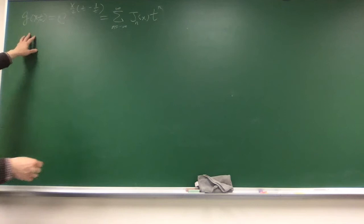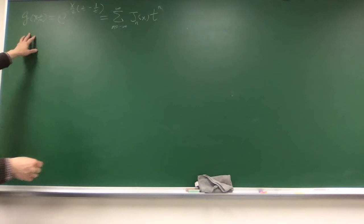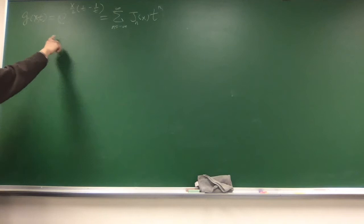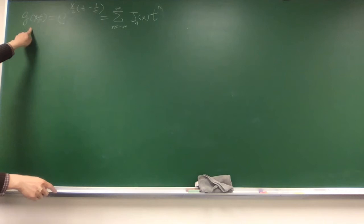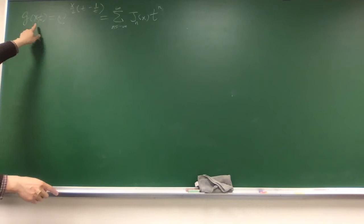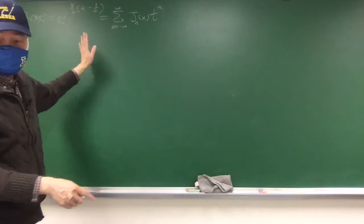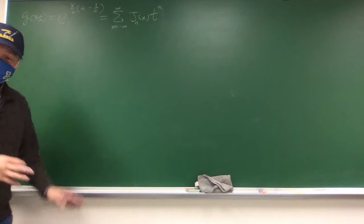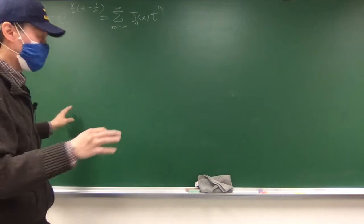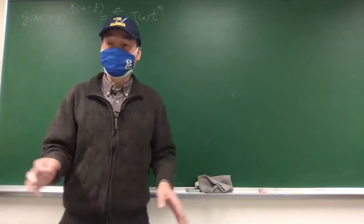Now we can use that to derive the recurrence relations. There are two independent recurrence relations, so we'll get them both from this generating function. The process is: because there are two arguments, we take the derivative of the generating function on both sides — left-hand side and right-hand side — with respect to x and t, and then compare both sides and express them in series.